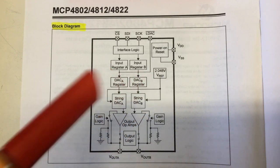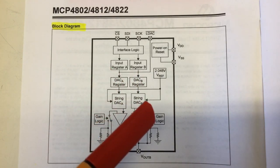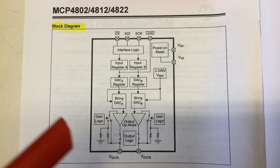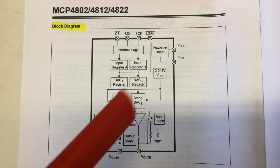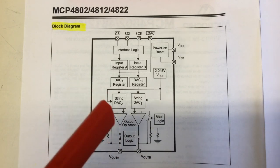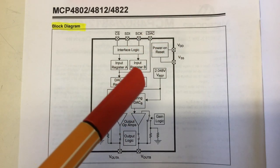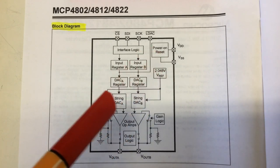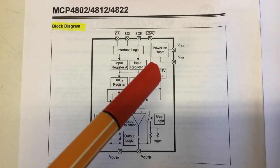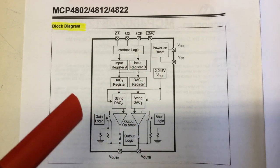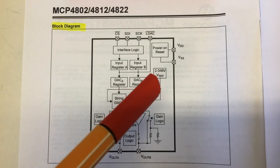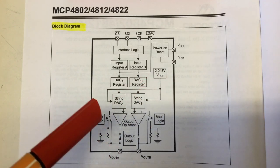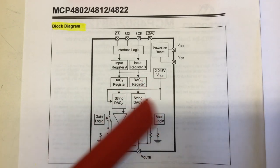The registers actually controlling the DACs won't change and therefore your output voltages won't change. The output of the DAC goes into two output amps. And you have here the option to change the gain of these output amps between one and two.